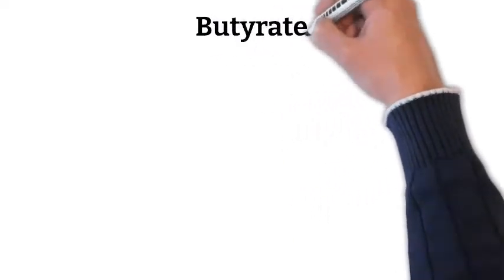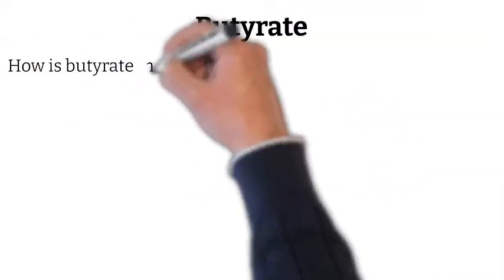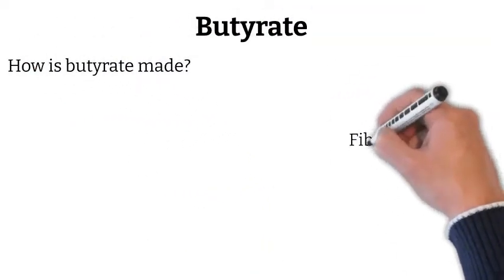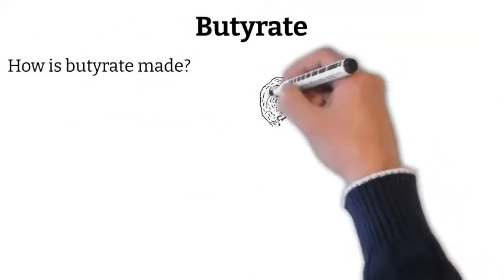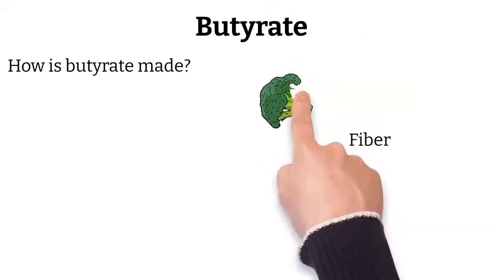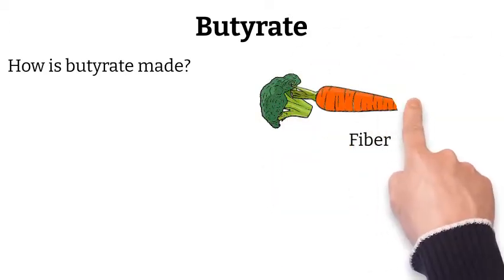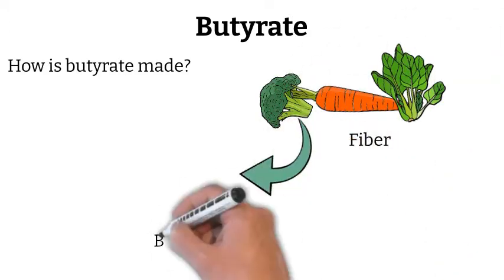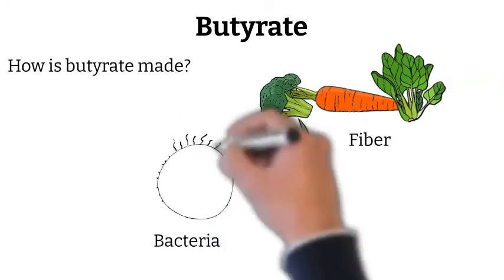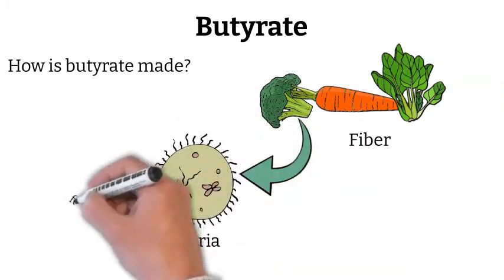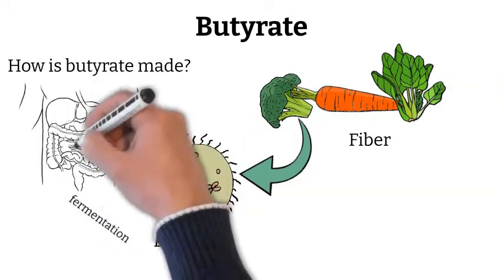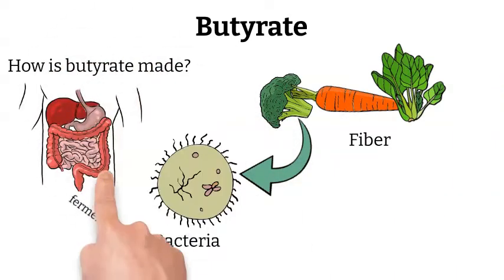You may be wondering how butyrate is made in the human body. It is really quite simple. When we eat foods that have fiber — for instance vegetables — the bacteria in our digestive tract ferments the fiber, here in the colon, and the end result is butyrate.